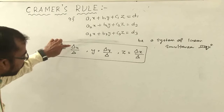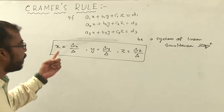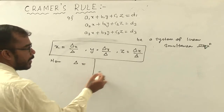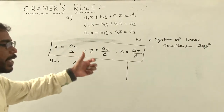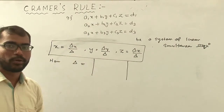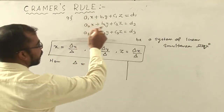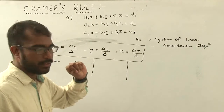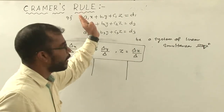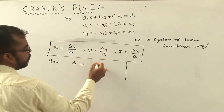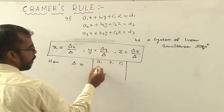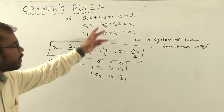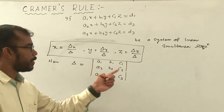Here you can find the coefficient matrix. Del means the determinant of the coefficients of the three variables. The systematic order is first x, then y, then z. So Del is equal to the determinant of a1, b1, c1, a2, b2, c2, a3, b3, c3. These are the coefficients of the variables.